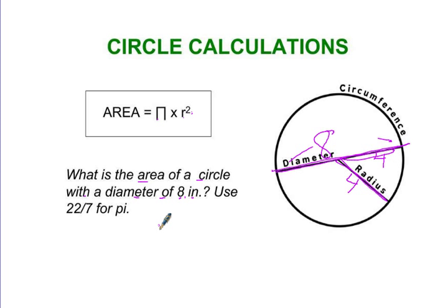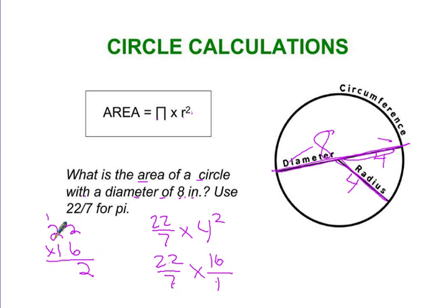So to find the answer to the area here, we do 22 sevenths times 4 squared. Well, what's 4 squared equal to? That's 4 times 4. So actually we're doing 22 sevenths times 16 over 1. We look to see if we can cross-reduce, which we cannot. And so we have to do 22. Just show your work just like this. 2 times 6 is 12. 2 times 6 is 12 plus 1 is 13. 0. 22 times 1 is 22. Add that together and get 2, 5, 3, 352.